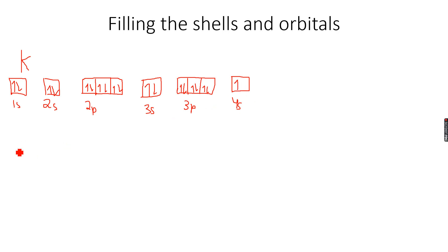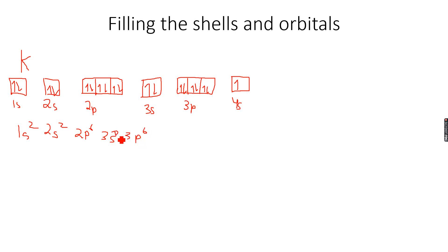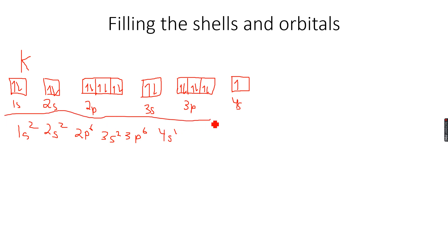So the electronic configuration of potassium is 1s² 2s² 2p⁶ 3s² 3p⁶ 4s¹. I made a mistake earlier — there are 2 electrons in 3s, so it is 3s², not 3s¹. The full configuration is 1s² 2s² 2p⁶ 3s² 3p⁶ 4s¹.